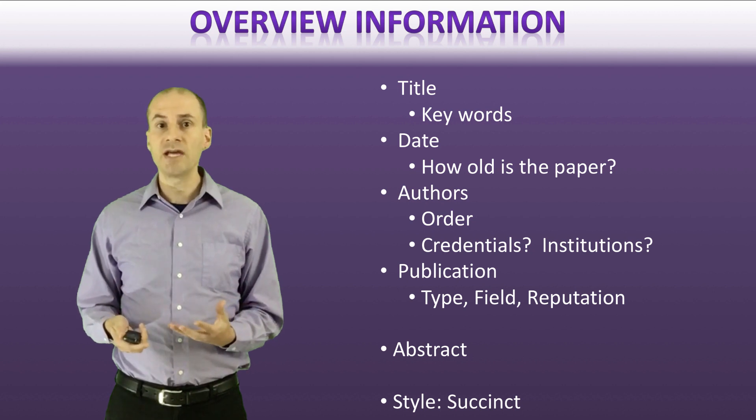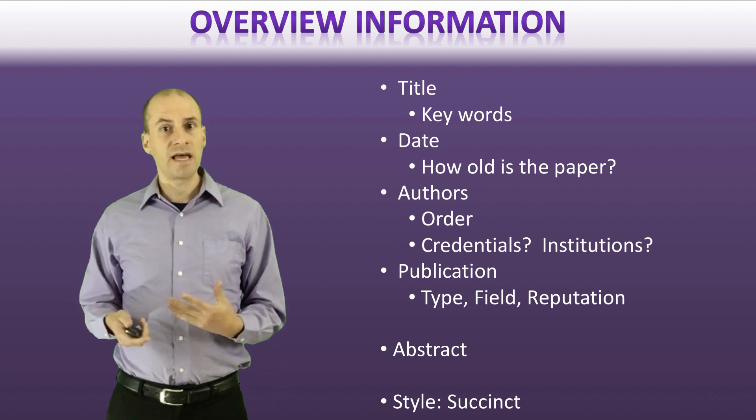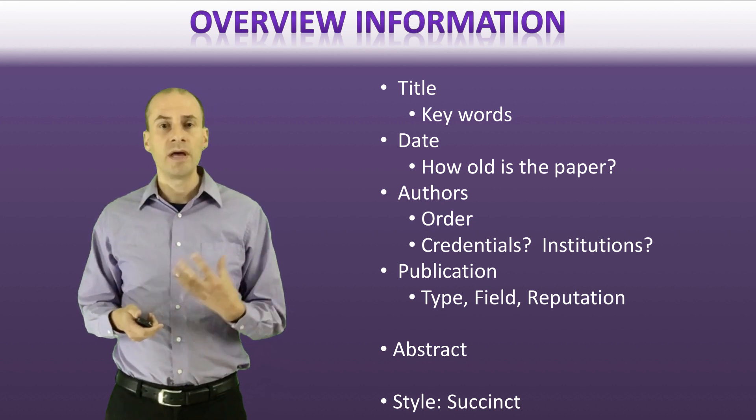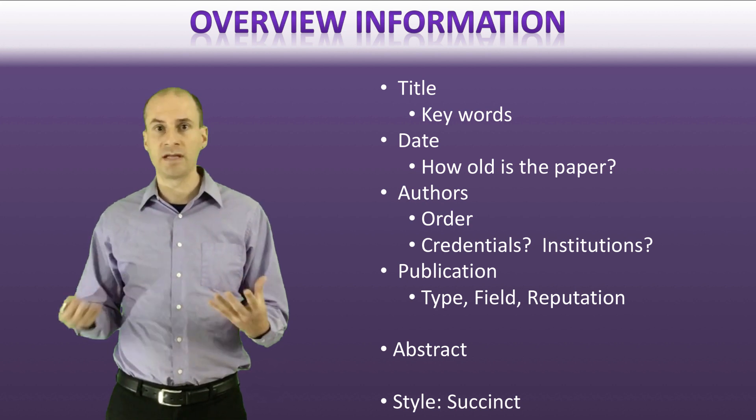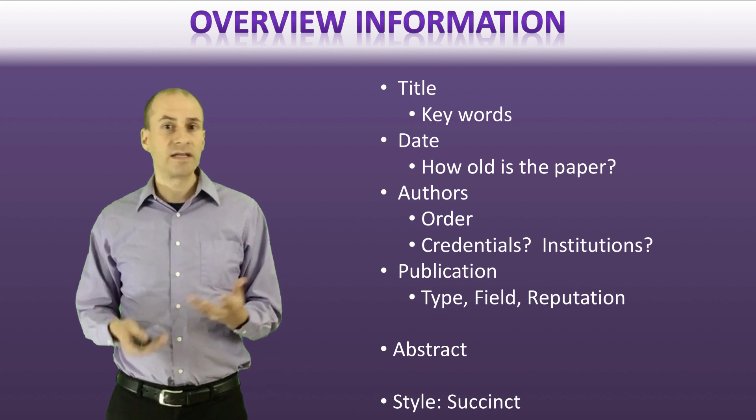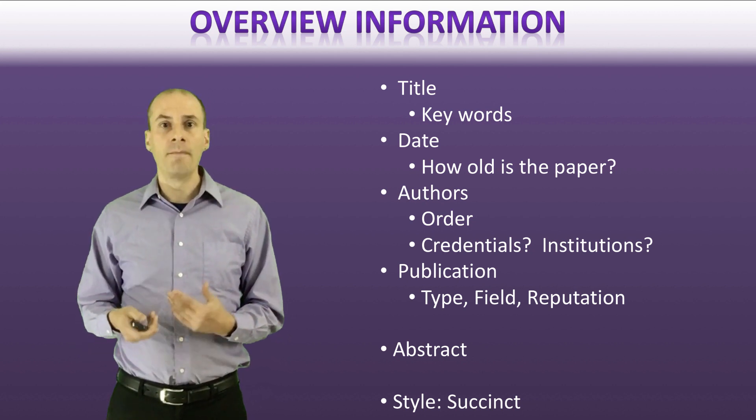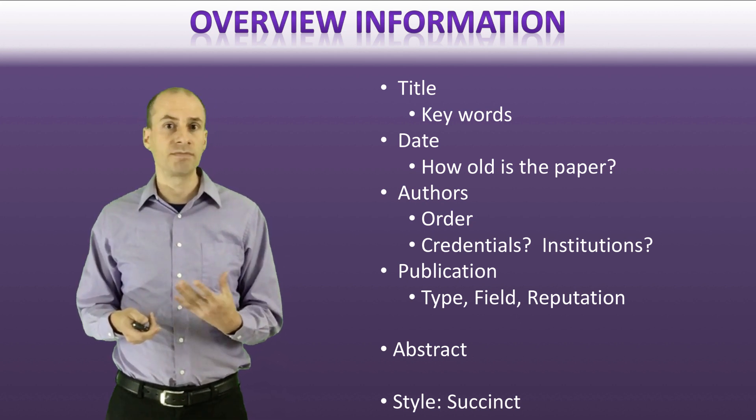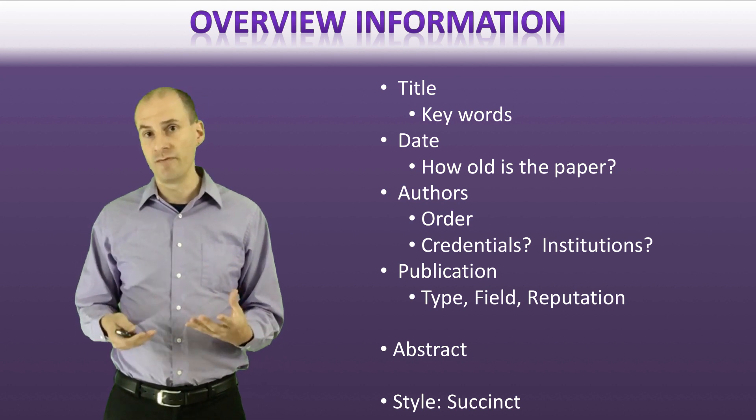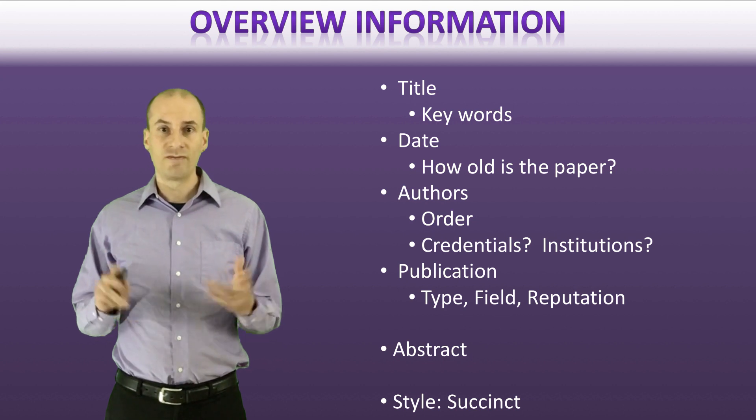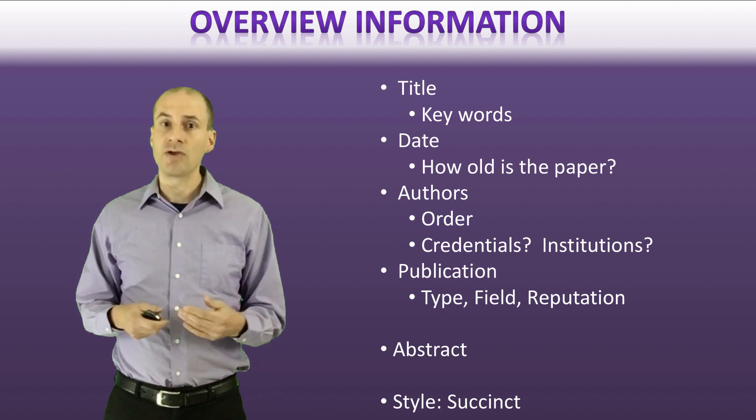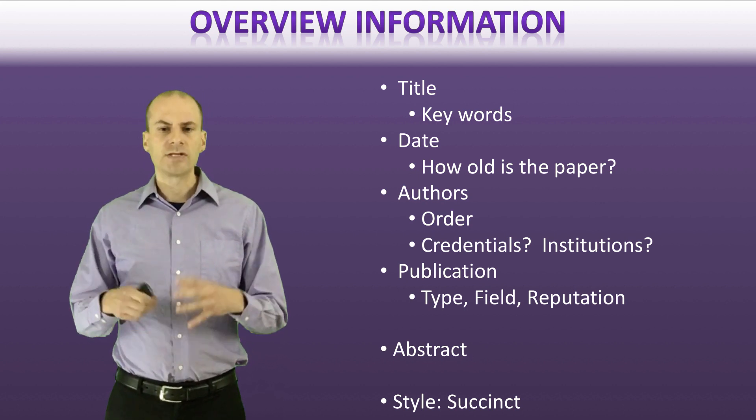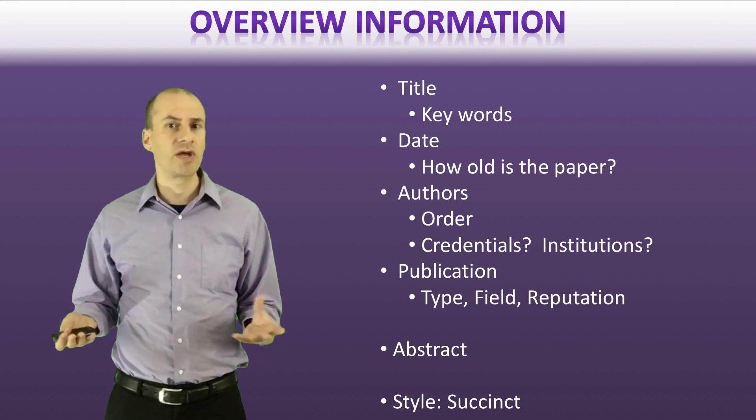Journals that have a strong reputation, that indicates that the paper that you're reading probably has undergone appropriate review and probably is a stronger more important paper than in other publications. That's a general rule that isn't always true, but there are also publications that do not have a good reputation and these are publications that sometimes do not actually do a very effective review of the scholarship. And those junk publications may indicate that the paper that you're reading is actually not a very reputable source of information.